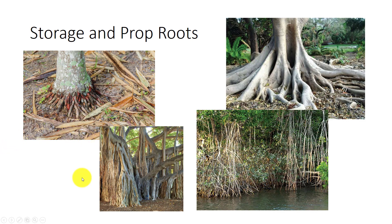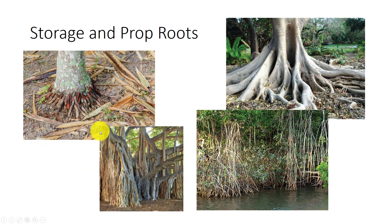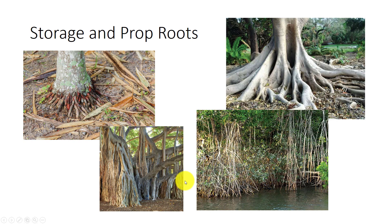Prop roots are adventitious roots that grow extensively through the air. They provide extra absorptive capacity and extra stability, as in this small palm. They brace the plant against wind and water currents. Prop roots are common in monocots such as palms and corn, but also in eudicots such as this banyan tree. Roots of certain tropical trees become tall, plate-like buttress roots, like this ficus.